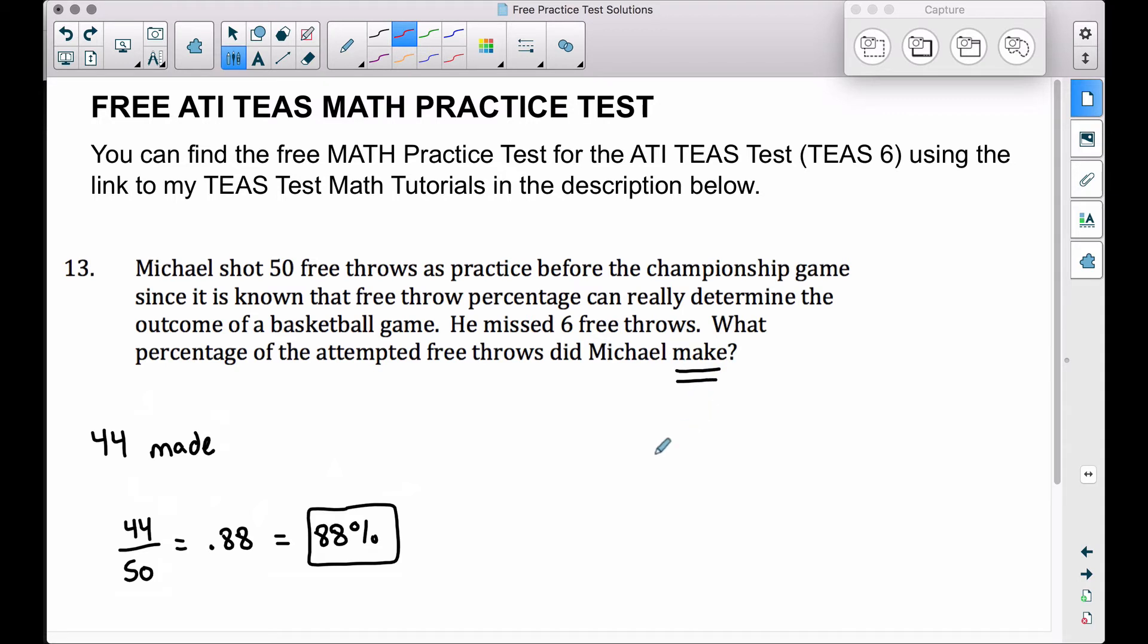So we already said that he made 44 out of 50. This is equal to what percent over 100. Now we can set this up as a proportion as we have here: 44 out of 50 is what out of 100, and that what we are looking for is going to give us a percentage.